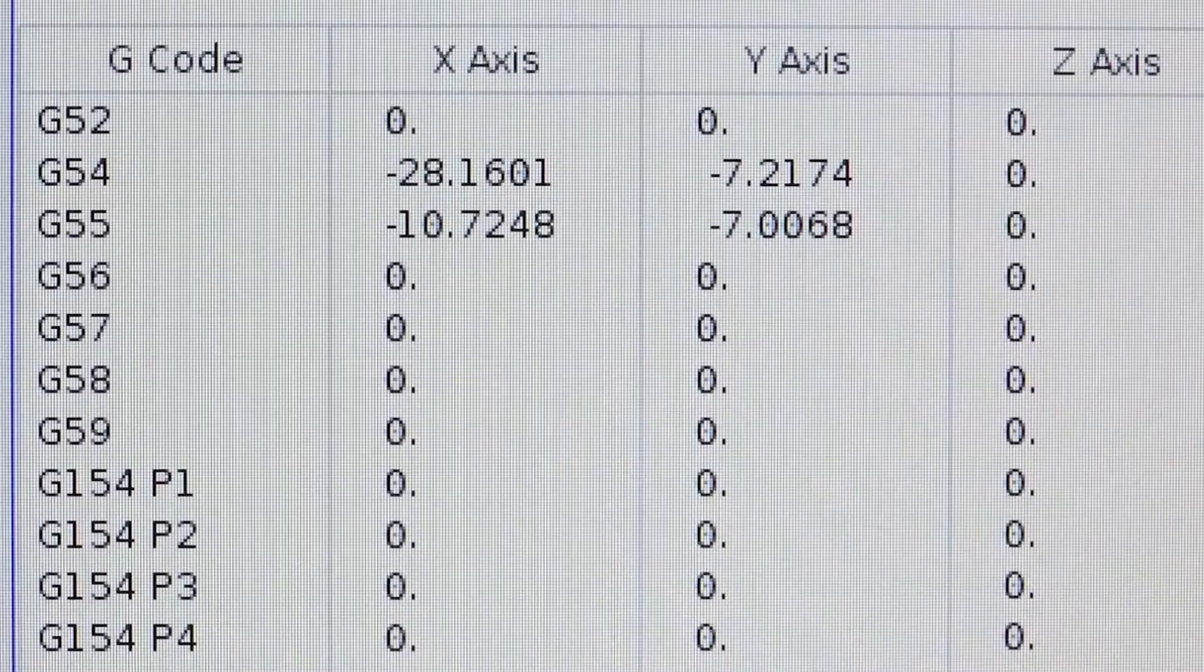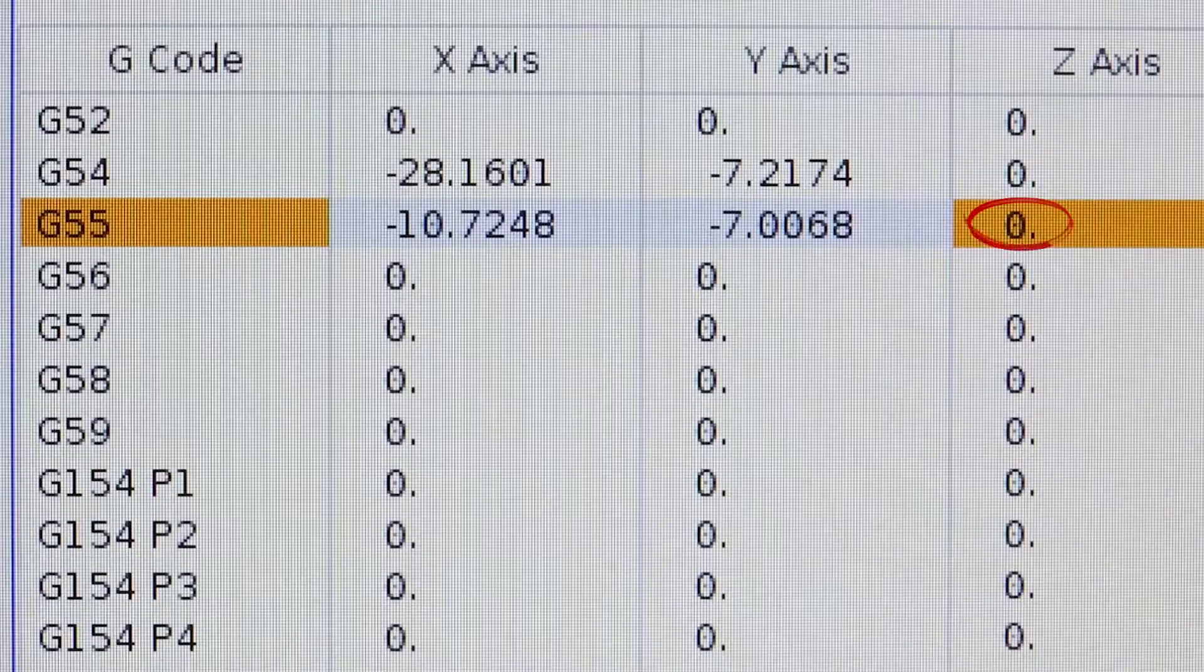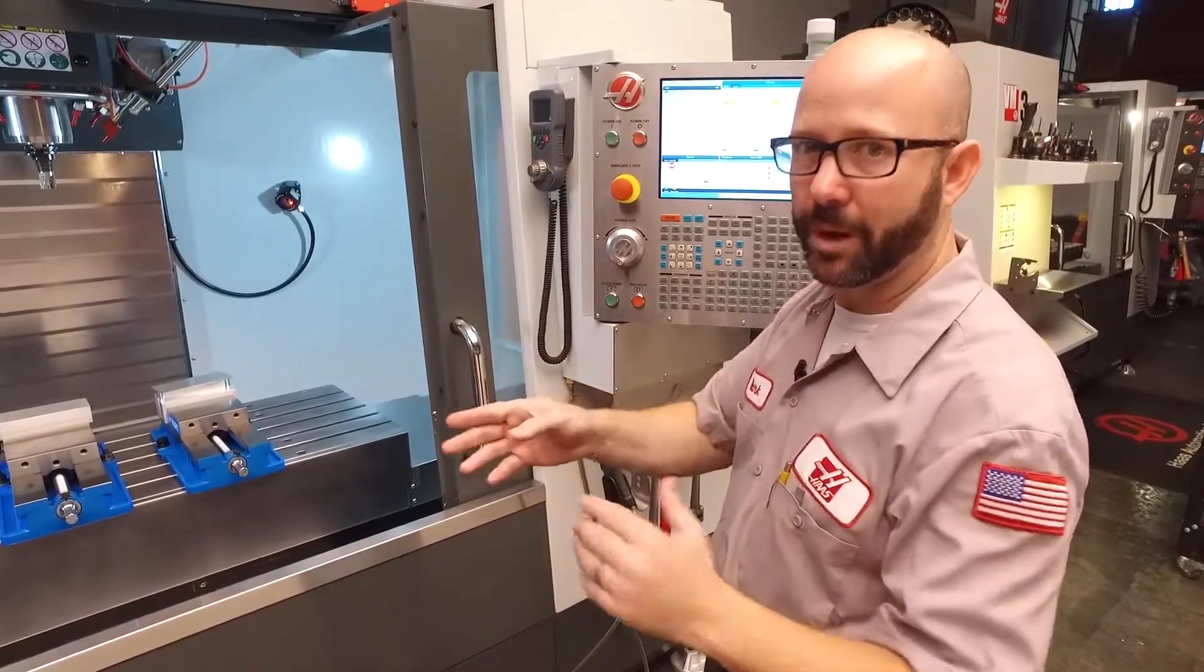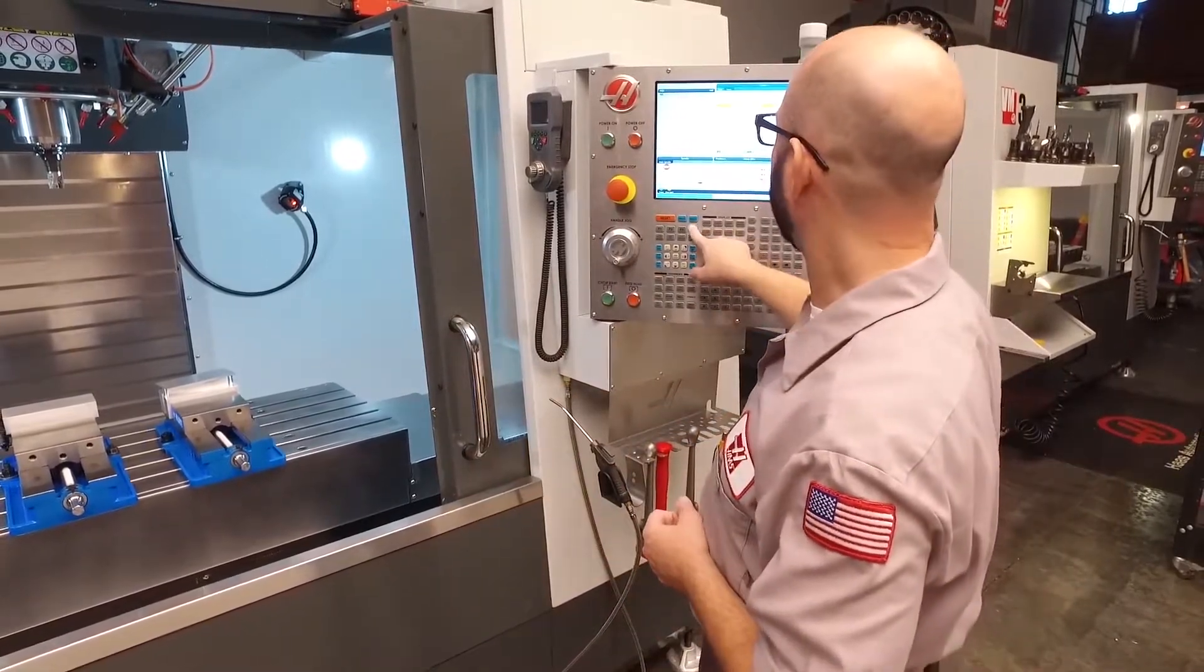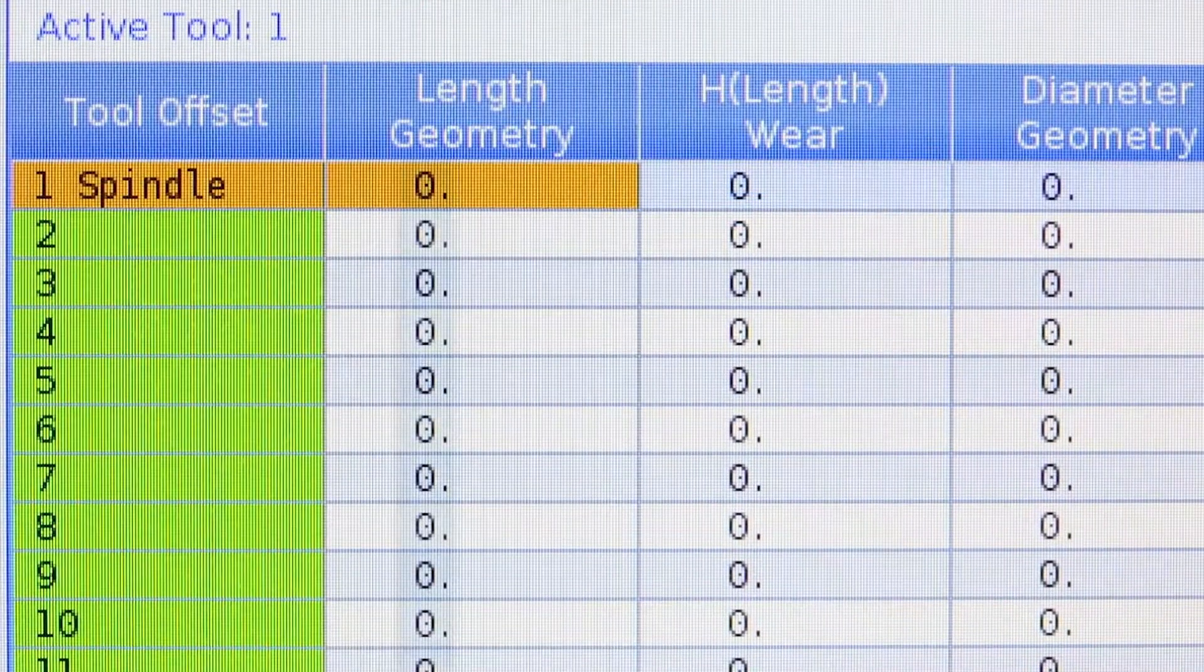I'm navigating to my work offset page and I'm just making sure that there's no values in for my G54 Z or my G55 Z. We're starting from scratch here. Now, I do have XY values, but that's because we've already found our XY locations. Watch the other videos. Now, I'm switching over to look at my tool offset page and all my tool offsets are blank right now as well. So we're ready to start.